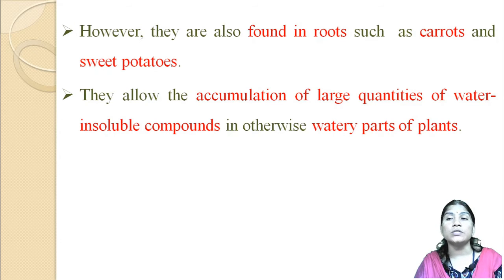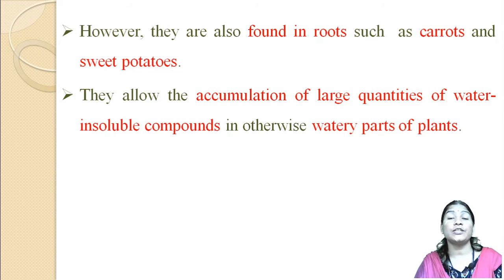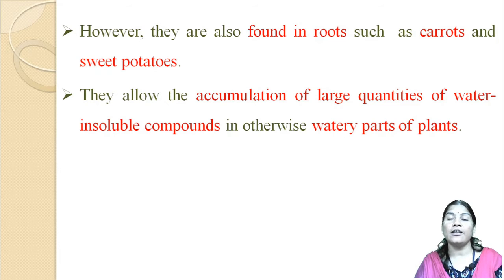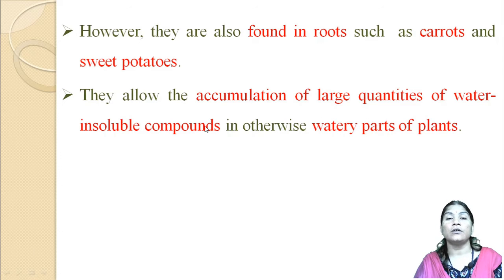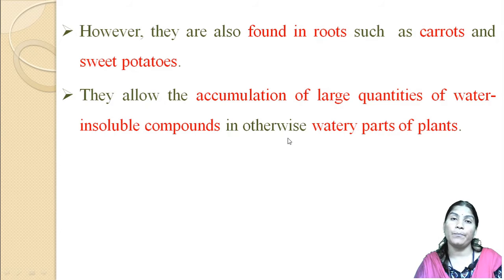Chromoplasts are also found in roots such as carrot and sweet potato. The carrot and sweet potato roots are colorful because of color pigments present in the chromoplasts. They allow the accumulation of large quantities of water-insoluble compounds in otherwise watery parts of the plant.